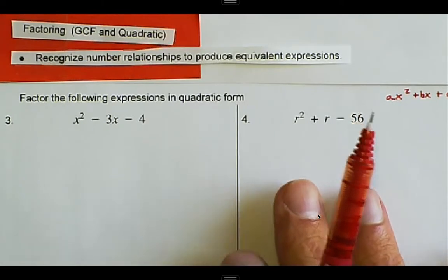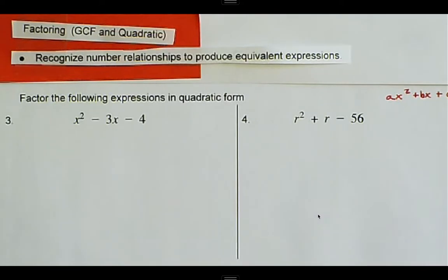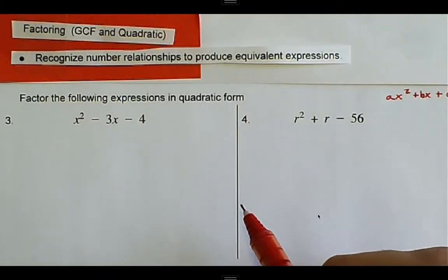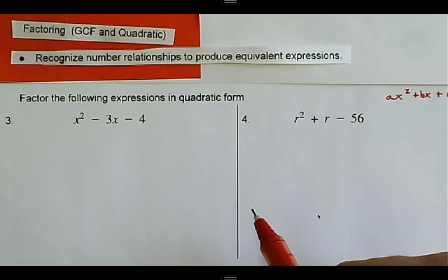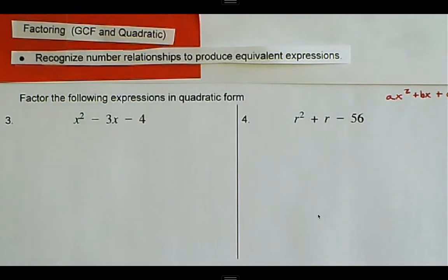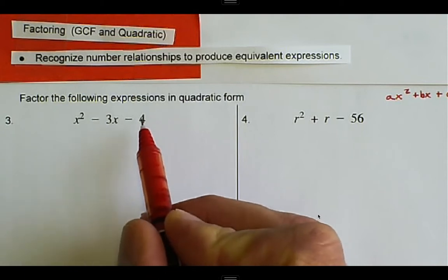This is going to be like the practice where we had to pick two numbers that had a sum that added to one number and a product that multiplied to another number. So we have to come up with numbers that will multiply to give us negative four.